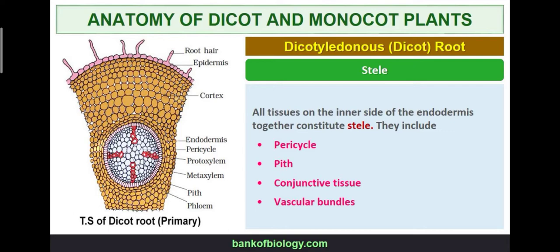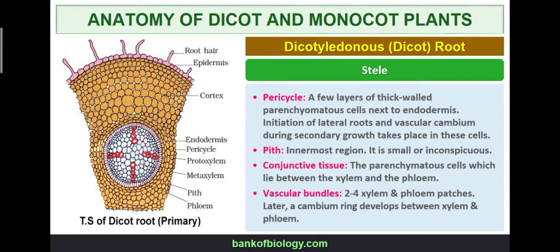Within the stele of the dicot root: the pericycle consists of a few layers of thick-walled parenchymatic cells next to the endodermis. The pith is the innermost region and is small or inconspicuous. Conjunctive tissues are the parenchymatous cells present between xylem and phloem. Vascular bundles show xylem and phloem patches with a cambium ring. The stele thus contains pericycle, xylem, phloem, pith, and conjunctive tissues.